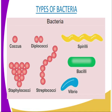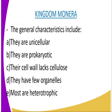The fourth characteristic is that there are few organelles and the organelles are not bound by a membrane. Their cells actually lack mitochondria. The fifth characteristic is that most of them are heterotrophic, feeding saprophytically or parasitically. Some are autotrophic, meaning they make their own food.